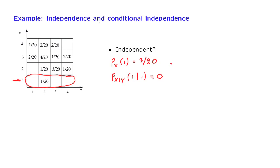And since these two numbers are different, this means that information from y changes our beliefs about what's going to happen to x. And so we do not have independence.